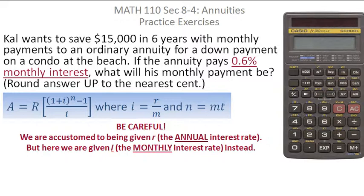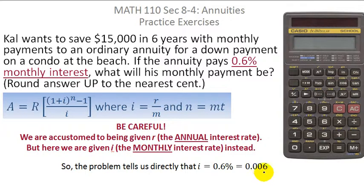So we take note that little i is 0.6%. We've got to change that to a decimal by moving the decimal place two places to the left. So if you move that decimal two places to the left, you get 0.006. Be very careful with this. It's an ordinary annuity problem, but they're telling you little i and not little r.